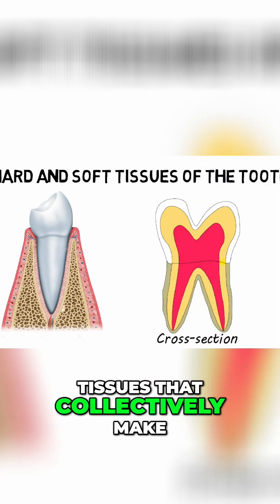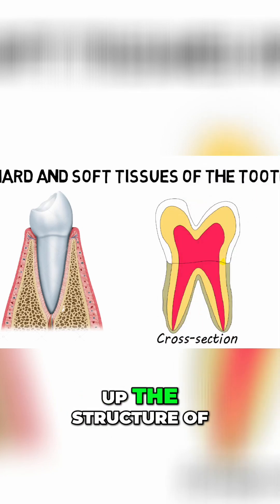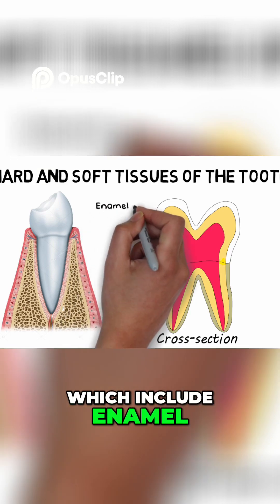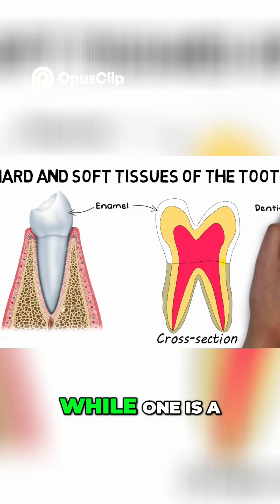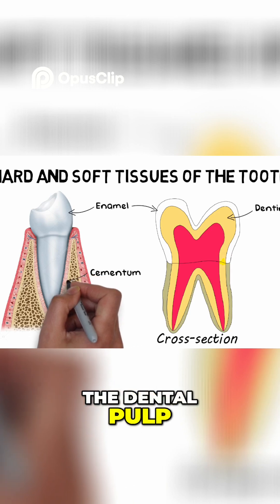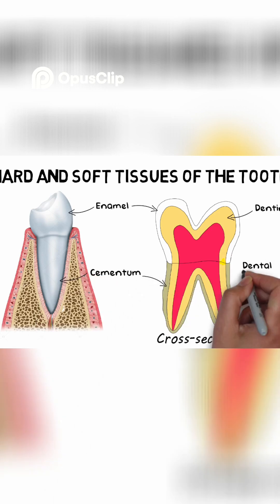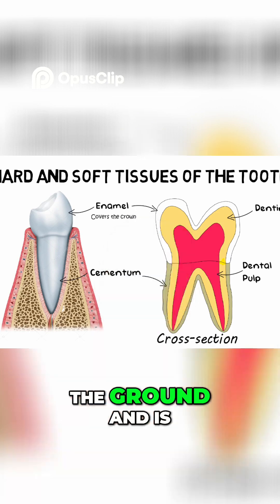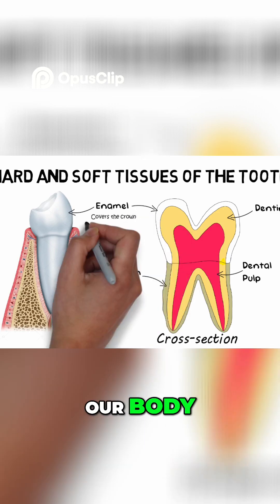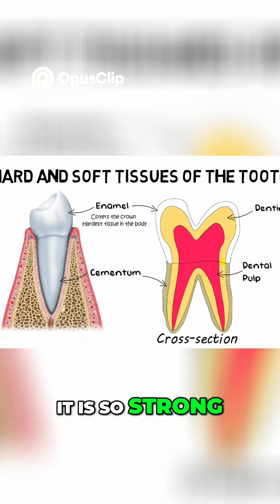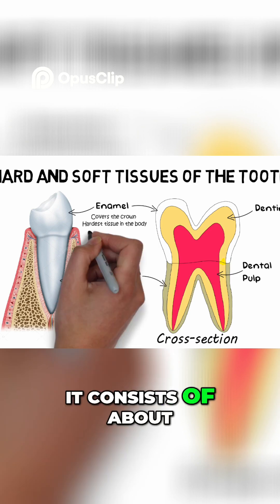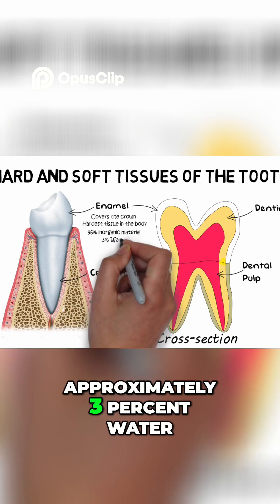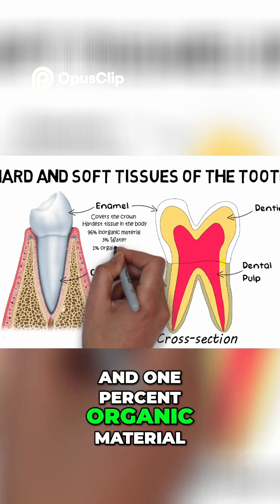There are four tissues that collectively make up the structure of a tooth. Three of them are hard tissues, which include enamel, dentine, and cementum, while one is a soft tissue — the dental pulp. Enamel is present only on the crown and is the hardest tissue in our body. Its composition consists of about 96 percent inorganic material, approximately three percent water, and one percent organic material.